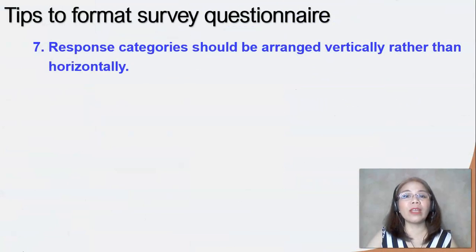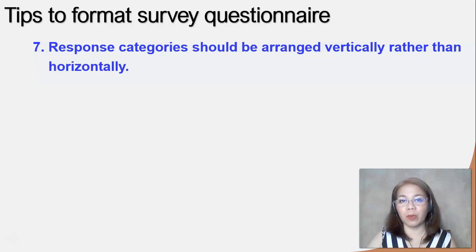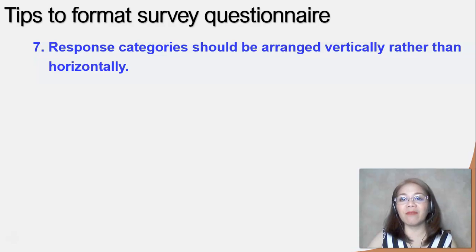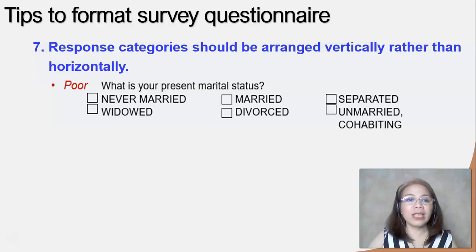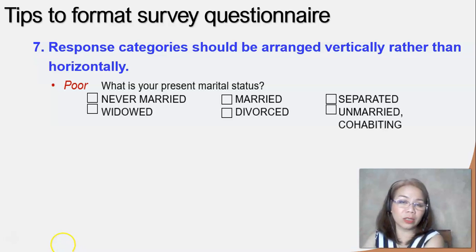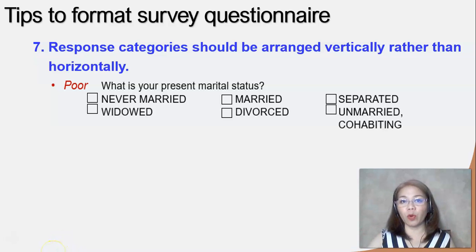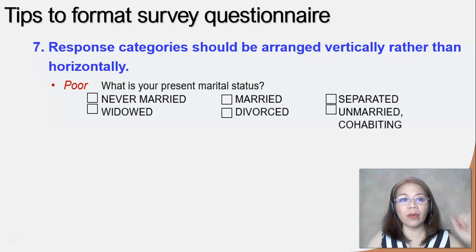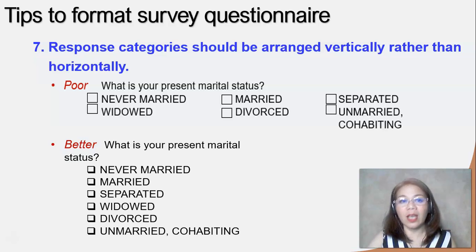Another tip is that when you write the response categories from which your respondent will choose an answer, you should arrange them vertically rather than horizontally. For example, 'What is your present marital status?' — if you put the choices horizontally, that is poor formatting. The correct approach is to arrange the response categories vertically.